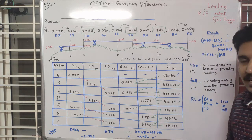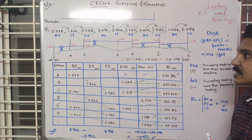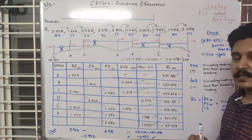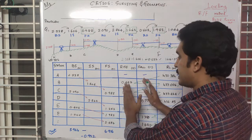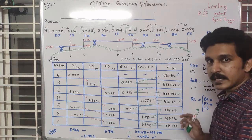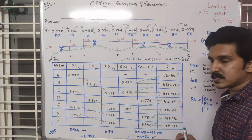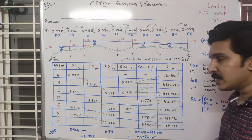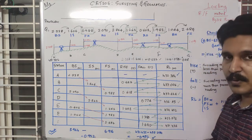What is the rise and fall method check? We are going to verify the error of the rise and fall. The answer to the error check of the rise and fall method — if we don't get a matching result, that means there is an error in the rise and fall calculation.